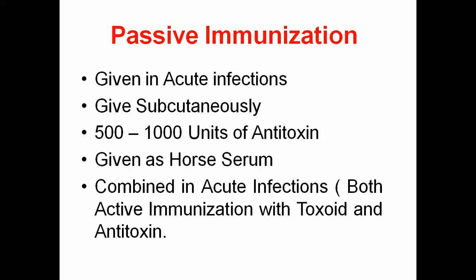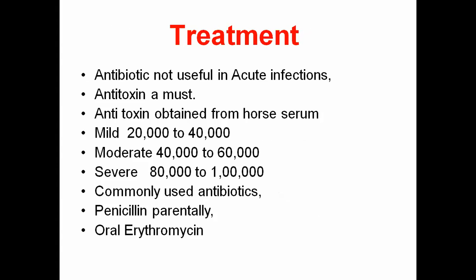Passive immunization is given in acute infection simultaneously: 500 to 1000 units of antitoxin given as horse serum. This is now very rare because active vaccination participation in all places has greatly reduced diphtheria reporting, and we are moving toward eradication.